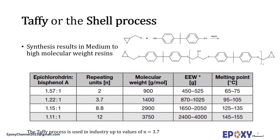As the proportion of ECH decreases, molecular weight and EEW increase, the resultant resin is less active, and the melting point also increases. The Taffy process is used industrially up to values of n equal to 3.7. The Taffy method can be divided into a water washing method, a solvent extraction method, and a solvent method — all based on polycondensation of bisphenol A and epichlorohydrin under NaOH for producing medium molecular weight solid epoxy resin. Domestic E20, E14, E12, and other epoxy resins are produced based on this method.